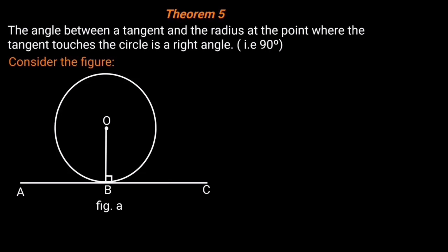Circle geometry, Theorem 5: The angle between a tangent and the radius at the point where the tangent touches the circle is a right angle, that is 90 degrees. In the figure, OB is a radius and ABC is a tangent. The angle at B where they meet is 90 degrees, hence angle OBC is equal to 90 degrees.